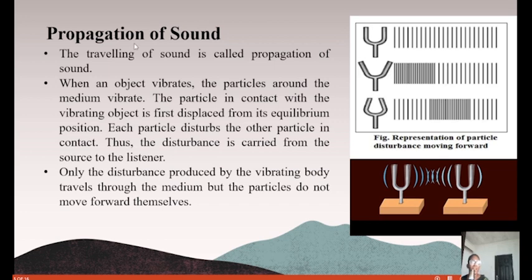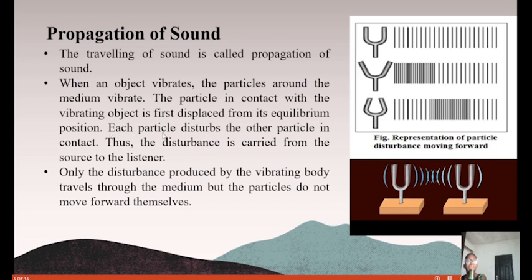Propagation of sound: the traveling of sound from one point to another is called the propagation of sound. When an object vibrates, the particles around the medium vibrate. The particle in contact with the vibrating object is forced to displace from its equilibrium position. Each particle disturbs the other particle in contact. Thus the disturbance is carried from the source to the listener.